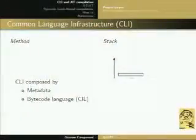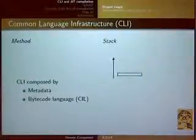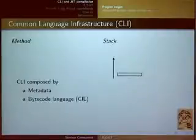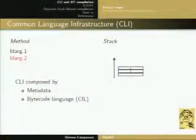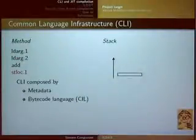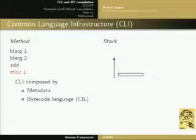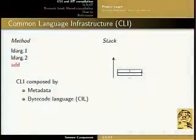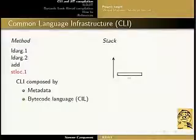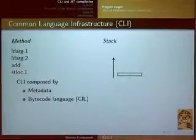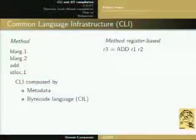Basically, CLI is composed of metadata, which is composed of five streams. Then we have the bytecode language CIL, which is a stack-based language. For example, if you want to add the first two parameters and store the result to the first local variable, we need to push the first two arguments, perform the operation, and then store the result at the first local variable.